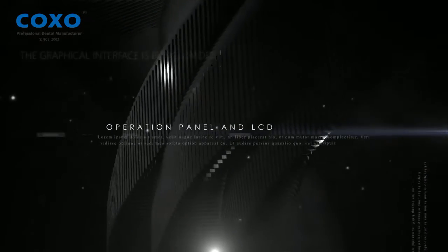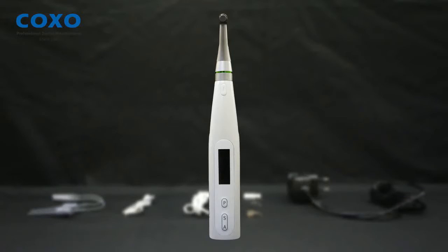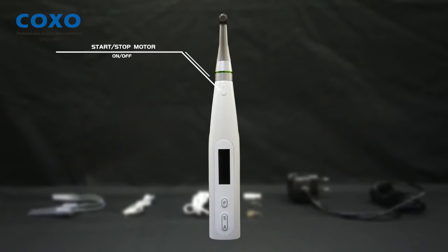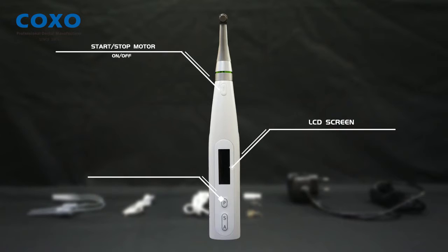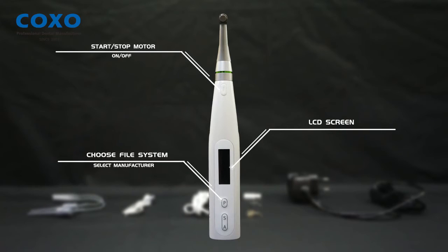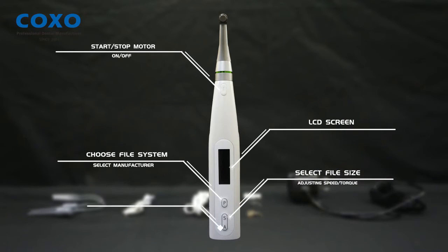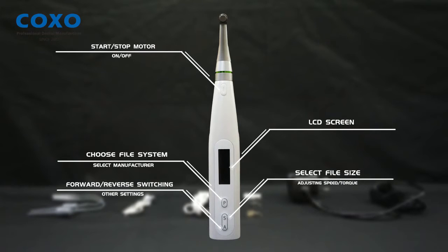Operation panel and LCD. Start and stop motor. On and off LCD screen. Choose file system. Select manufacturer. Select file size. Adjusting speed and torque. Forward and reverse switching. Other settings.